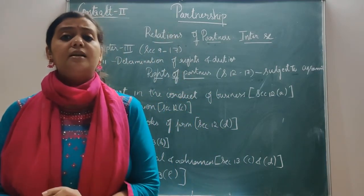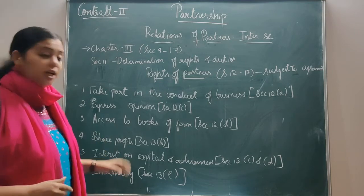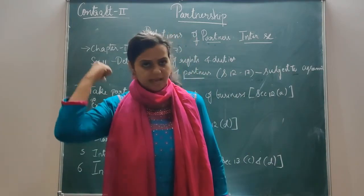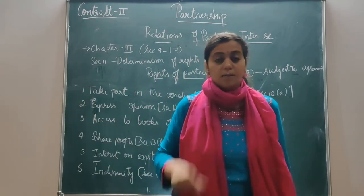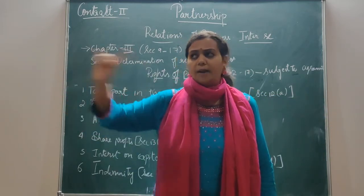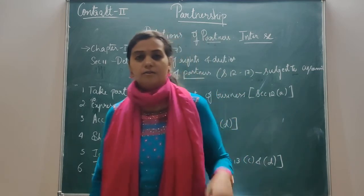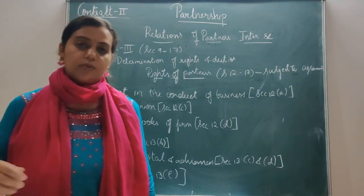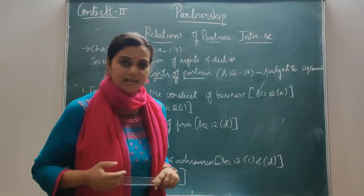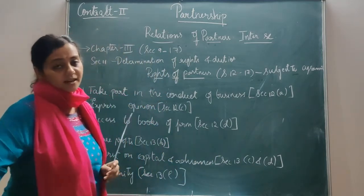Another point is the profit sharing ratio. Under the Act, there should be an equal profit sharing ratio — whatever profits they have got, even though there are four partners, they have equal profit sharing. But if they say no, and they want different ratios — Partner A gets one-fourth, Partner 2 gets one-fourth, and Partner 3 gets two-fourths — if they decide certain ratios, they will get profits that way. Always remember: it is subject to the agreements between the partners, expressed or implied.